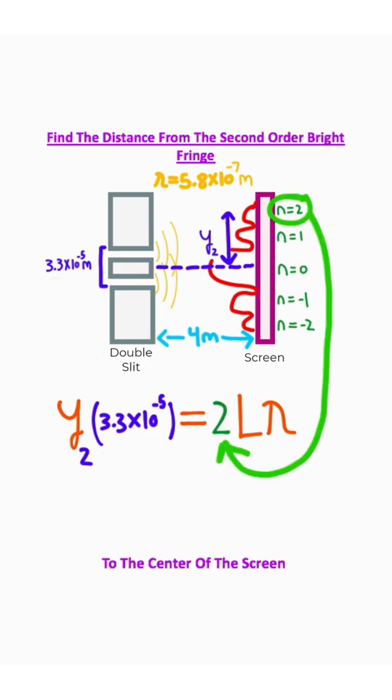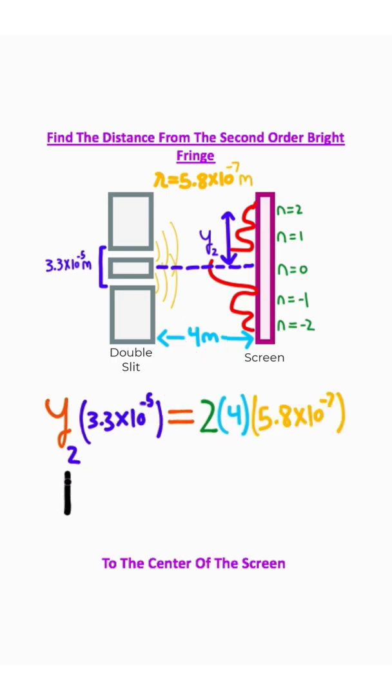n, once again, that's just going to be 2. This l is going to be the distance between these two objects, which is 4 meters. Lambda, that's our wavelength, so all we need to do is solve for y2.